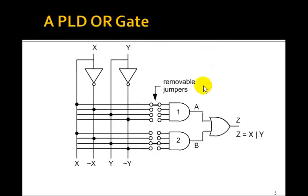If we wanted an OR gate, we just change the switches. So if we connect this one to X, A would be X. Connect this one to Y, this B would be Y. And Z is just then X or Y.